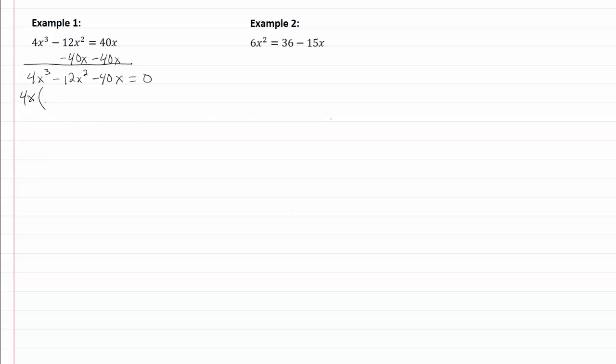So 4 divided by 4 is 1, x³ divided by x is x², 12 divided by 4 is 3, and x² divided by x is x. 40 divided by 4 is 10, and x divided by x is 1.